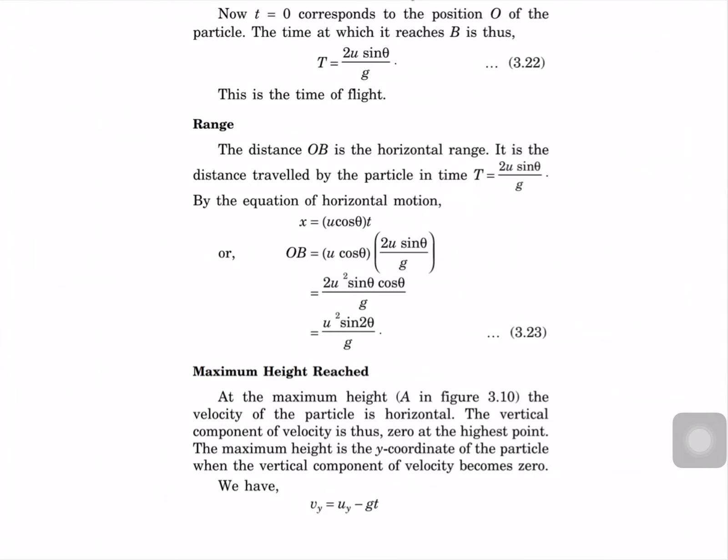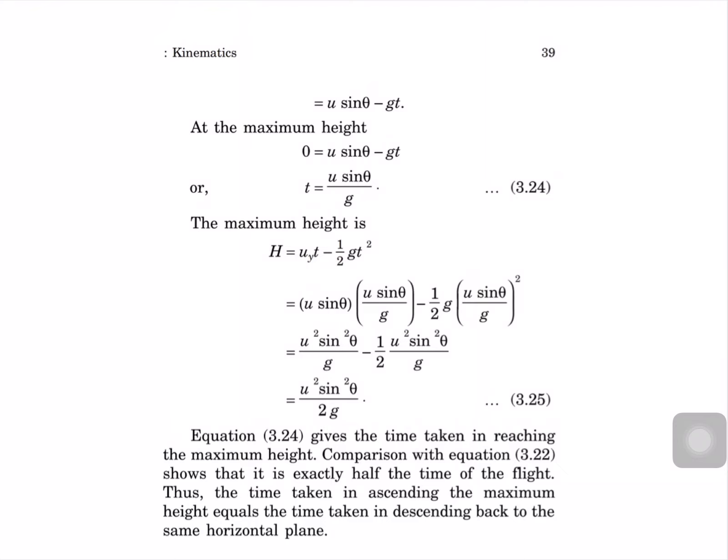For maximum height: at the maximum height A, the vertical component of velocity is zero. Maximum height is the y coordinate when vertical velocity becomes zero. So 0 equal to U sin theta minus g·t, giving t equal to U sin theta by g. Substituting into the displacement equation, maximum height H equal to U² sin² theta by 2g.